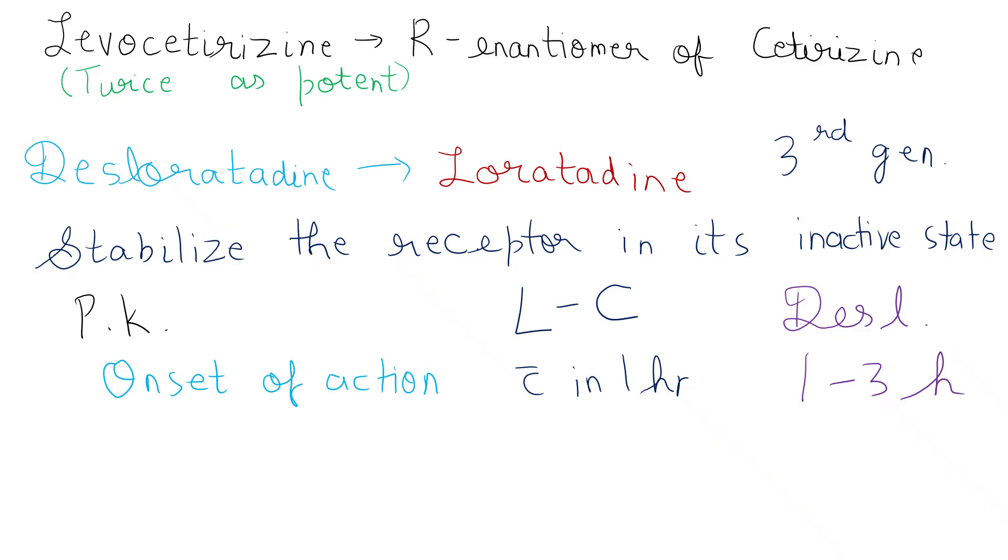Half-life is where they really differ, a high yield concept for your NEET PG and USMLE exam. Levocetirazine has a half-life of 7 to 10 hours requiring twice daily dosing, whereas desloratidine has a 15 to 27 hour half-life which allows it to be given once daily. Both have excellent oral bioavailability over 95% and undergo minimal hepatic metabolism, making them safer in liver disease.